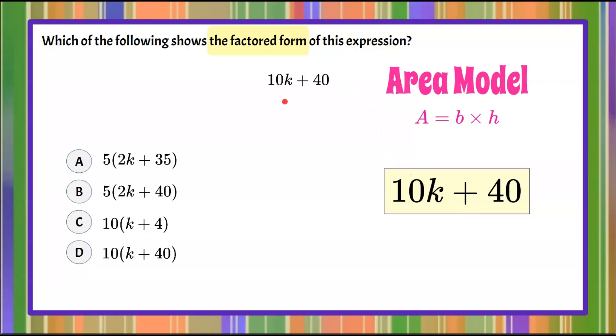we're going to consider the fact that it has two terms, and they are not like terms. This is an algebraic expression in simplest form, because there's only one variable term and one constant term.